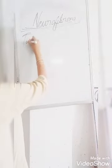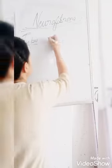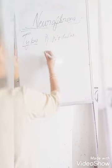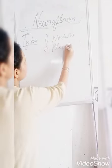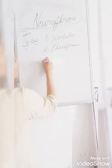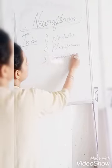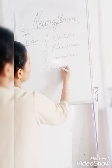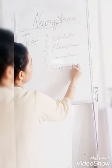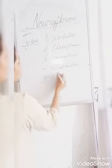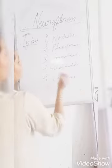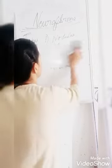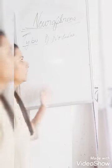Today we will take the types of neurofibroma. Basically there are five types: the first is nodular neurofibroma, the second is plexiform neurofibroma, the third is generalized neurofibroma, the fourth is elephantiatic neurofibroma, and the fifth is cutaneous neurofibroma.